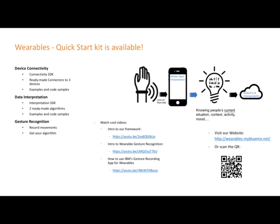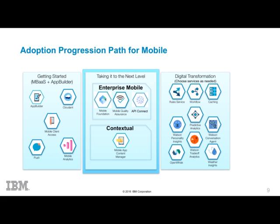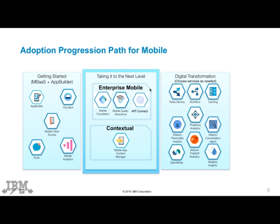That is an overview of the Bluemix mobile services that allow you to get started with mobile application development. We looked at the App Builder service for visually designing your app, Cloudant as a powerful NoSQL data store, Mobile Client Access for securing your app, Push Notification service for engaging users by sending relevant content, and Mobile Analytics service for insight into how your app is performing and being used. We will next take a look at the enterprise mobile services available in Bluemix: Mobile Quality Assurance, Mobile App Content Manager, and finally Mobile Foundation.